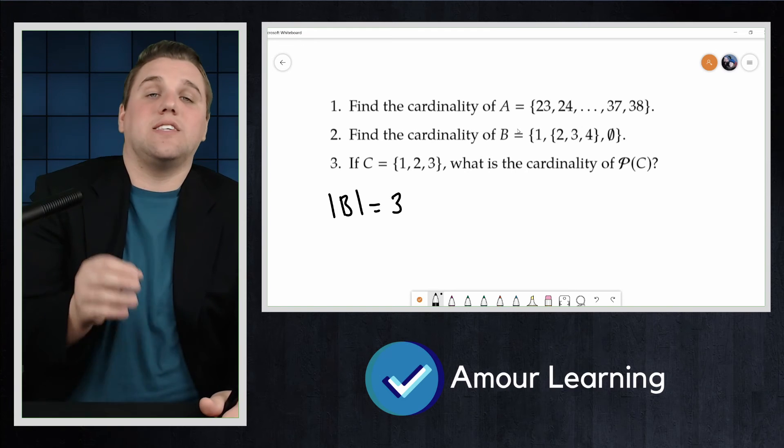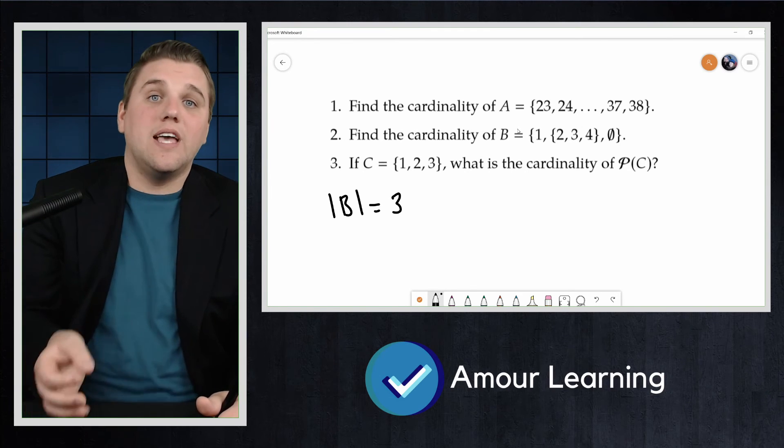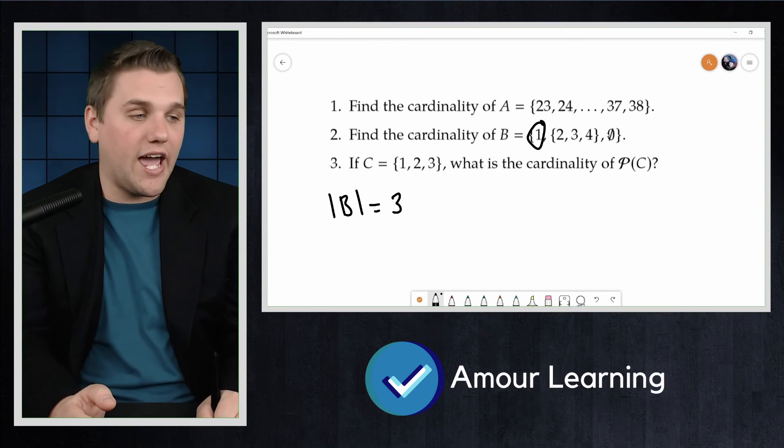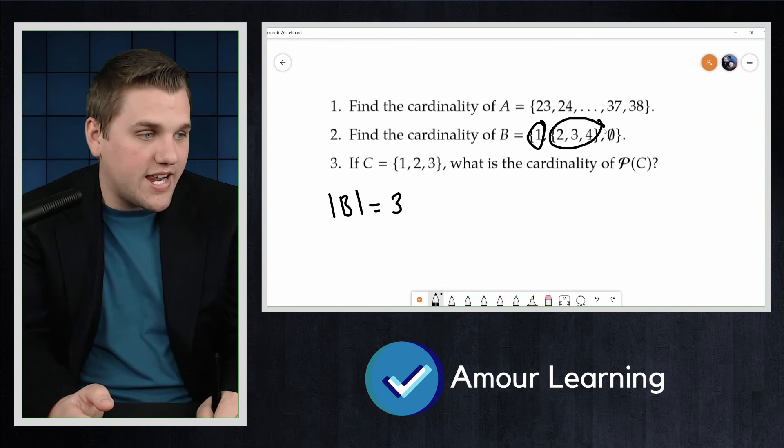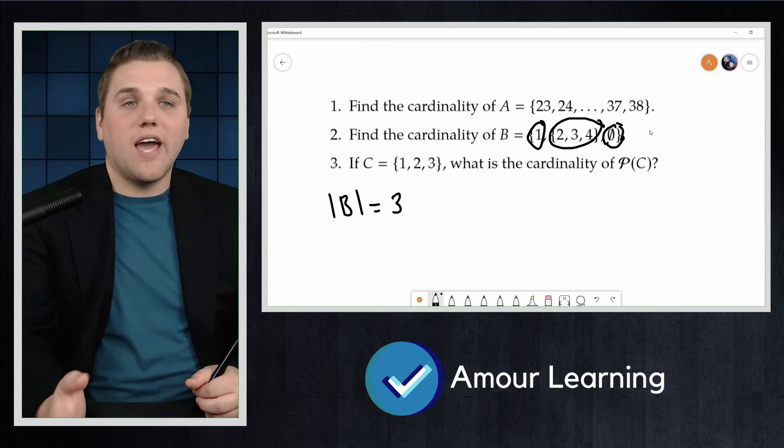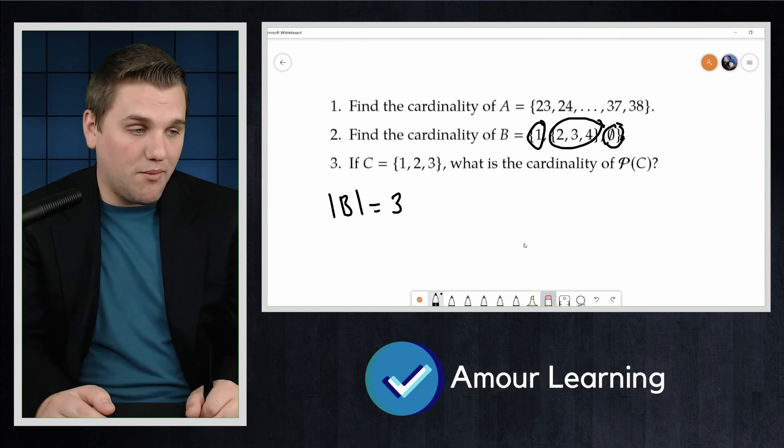And the reason is because each element is separated by a comma. So that's an element in my collection. That whole thing is an element in my collection. And that's an element in my collection. And so because of that, there are only three elements.